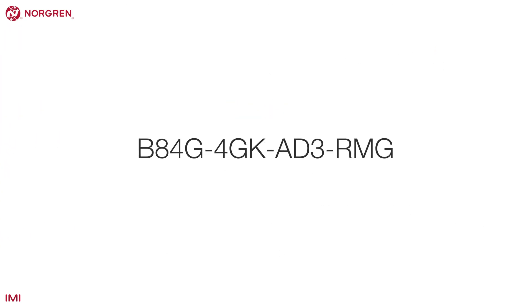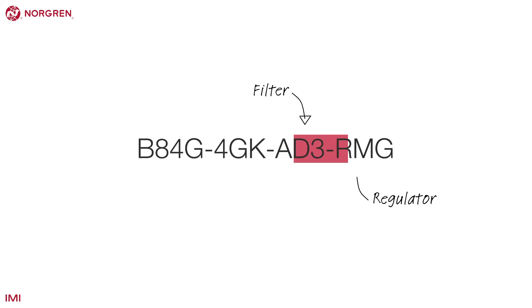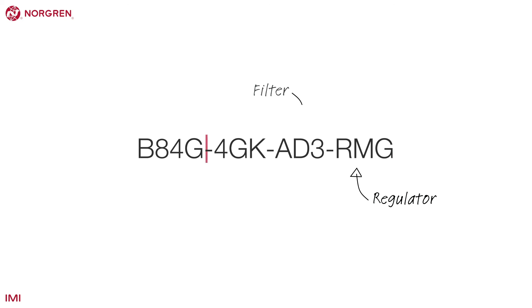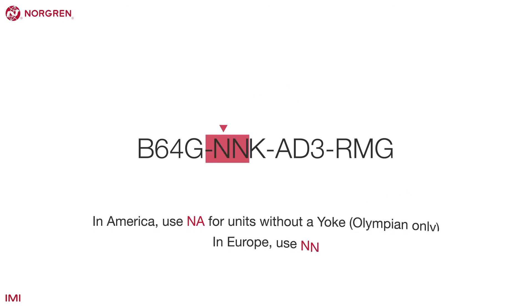Filter regulators generally use the same formula but require 13 digits to cover options relating to both the filter and the regulator. If you require a unit without the yoke, use NN in the fifth and sixth digits.